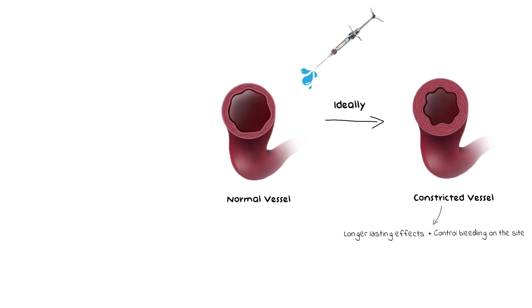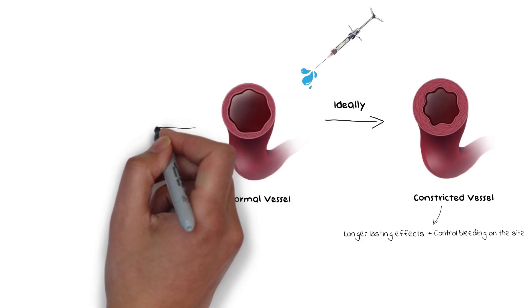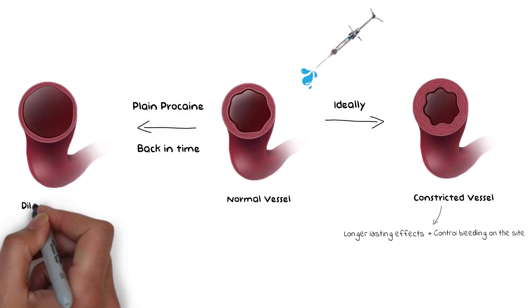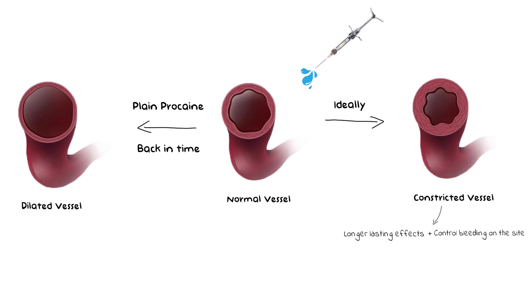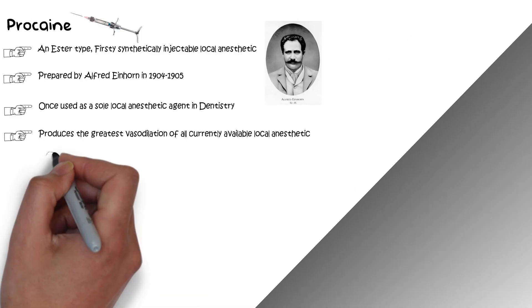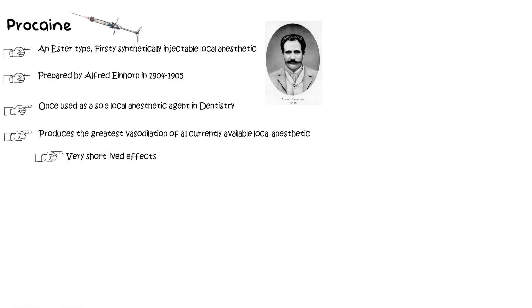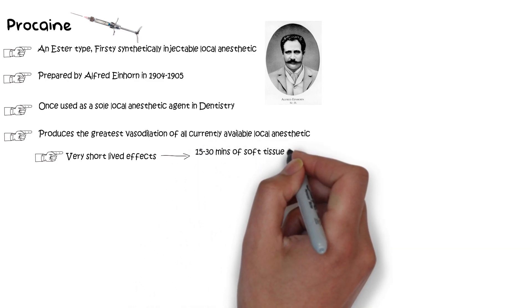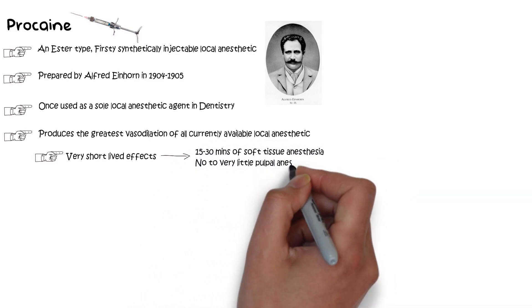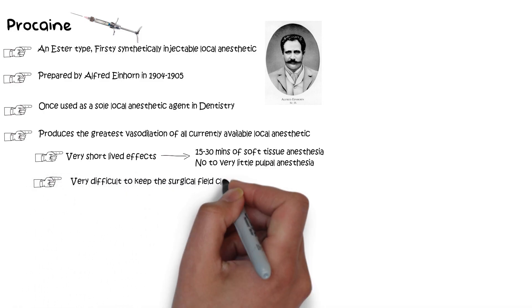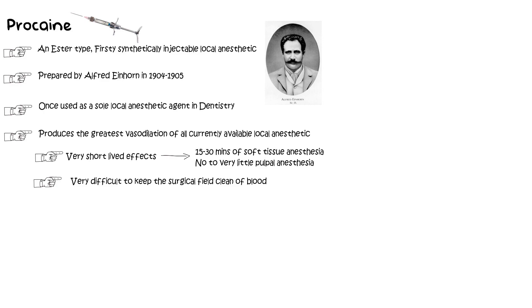To achieve this effect of vasoconstriction, nowadays local anesthetics have epinephrine in them. But back in the old days, procaine was used as a sole local anesthetic agent and it produced the greatest vasodilation of all local anesthetics available. Because of this immense vasodilation, the effects were very short-lived. Plain 2% procaine provided only 15 to 30 minutes of soft tissue anesthesia and virtually no pulpal anesthesia. Vasodilation also made it very difficult for the surgical field to remain neat and clean because of the profuse bleeding produced.